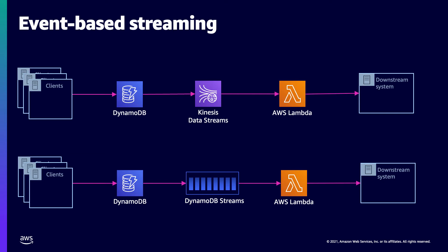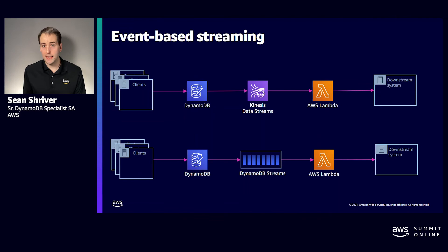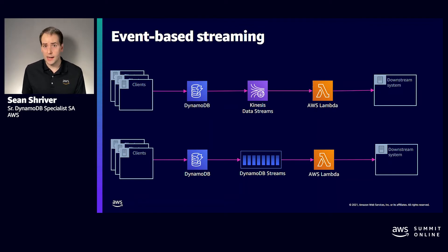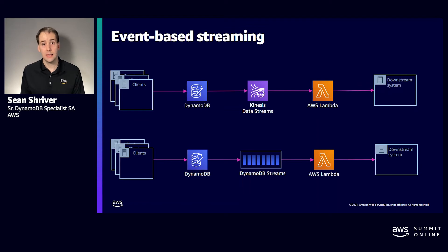The deviation between Dynamo Streams and Kinesis Data Streams makes sense when you consider they are entirely separate services created by different service teams with their own roadmaps. In either solution, DynamoDB acts as the producer or publisher of records into the streaming service. All changes for a table appear in the stream — a change is a create, update, or delete of a DynamoDB item that results in a mutation. If you delete an item that never existed or update an item with no changes, a stream record is not created. Reads do not create stream records because there's no mutation.